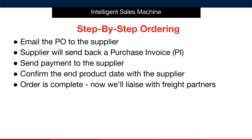Next, you'll look to confirm the end production date with the supplier so that you know when to expect the items. At this point, the order is complete and production will begin. You will now liaise with your freight partners immediately, letting them know the end production date well in advance so that they can give you a freight quote and get things moving, instead of waiting until the end and panicking that you don't have your freight organised. I'm going to go a lot deeper into each of these steps, but I wanted to give you a snapshot of what's to come so that you know exactly where we're going.